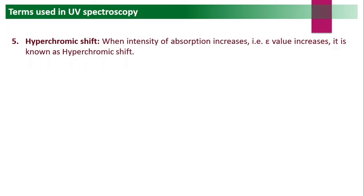The next term is hyperchromic shift. When the intensity of absorption increases — that is, the absorbance or epsilon value increases — it is known as hyperchromic shift. In this case, lambda max remains the same; only the height of the peak increases. That is called hyperchromic shift.